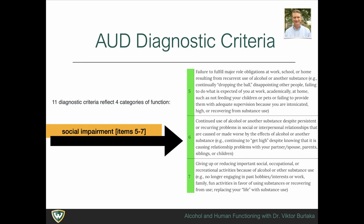The second function deals with social impairment and consequences of use, including three criteria. Criterion 5: failure to fulfill major roles at work, school, or home. Criterion 6: repeated use despite persistent social and interpersonal problems. Criterion 7: giving up or reducing social activities, work, and recreation because of use.